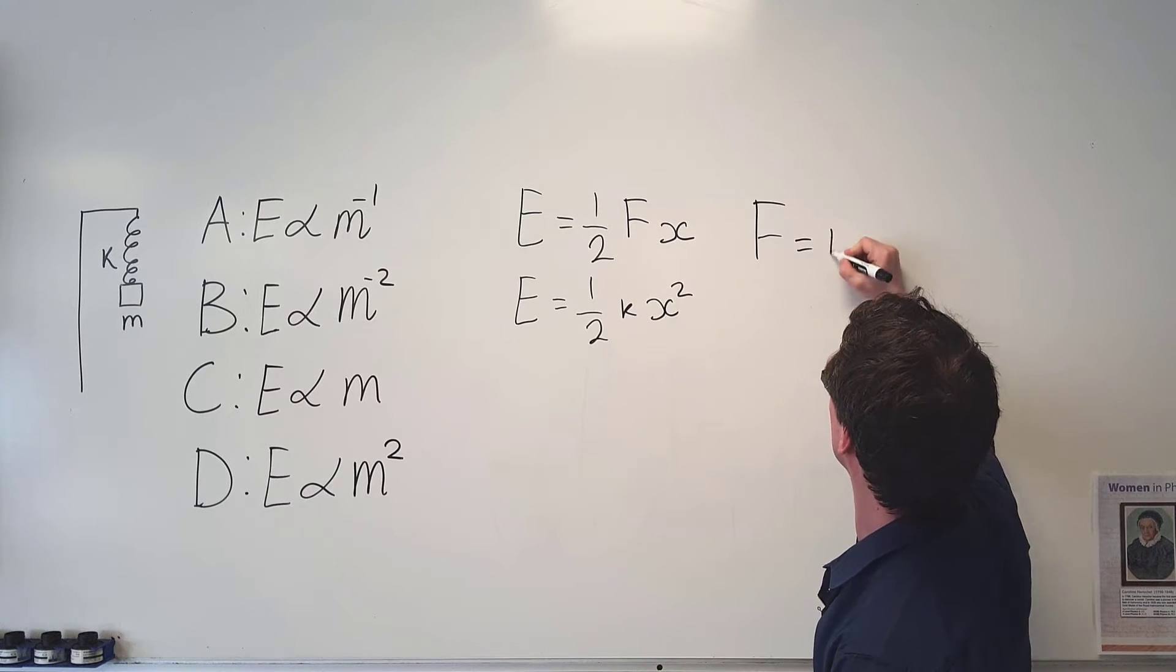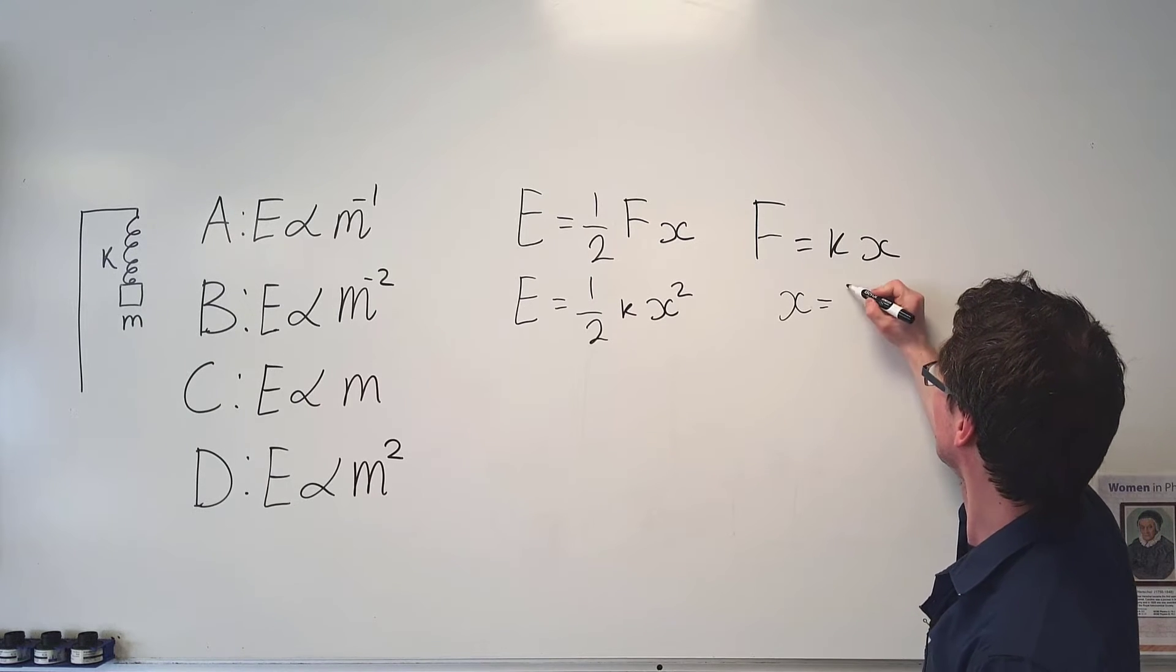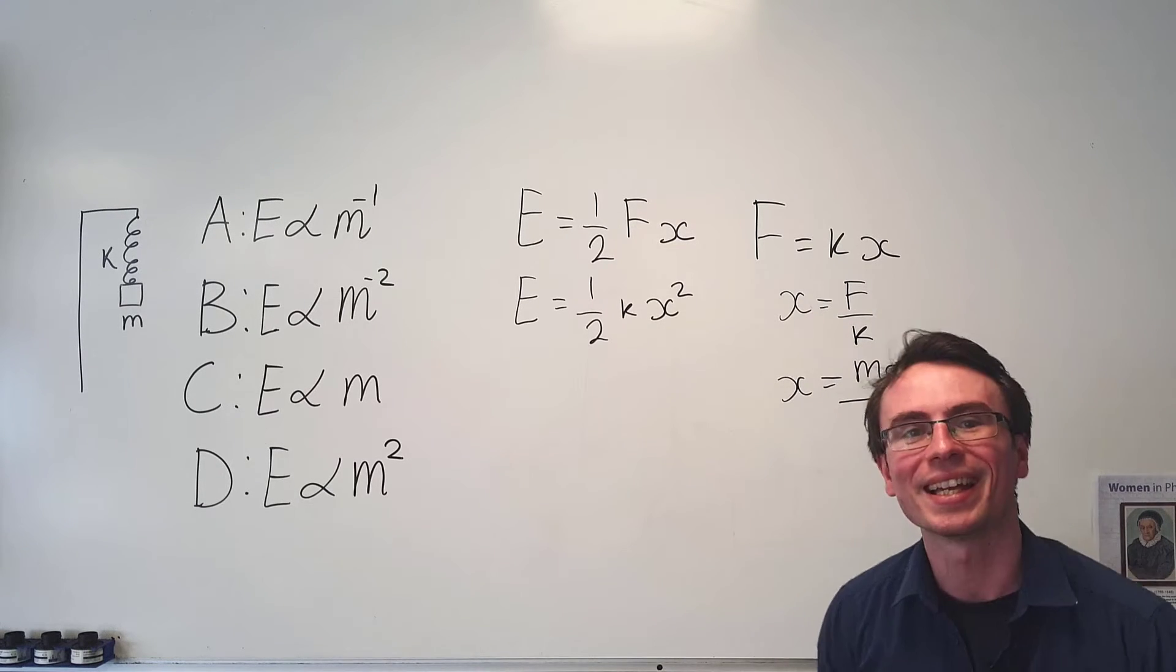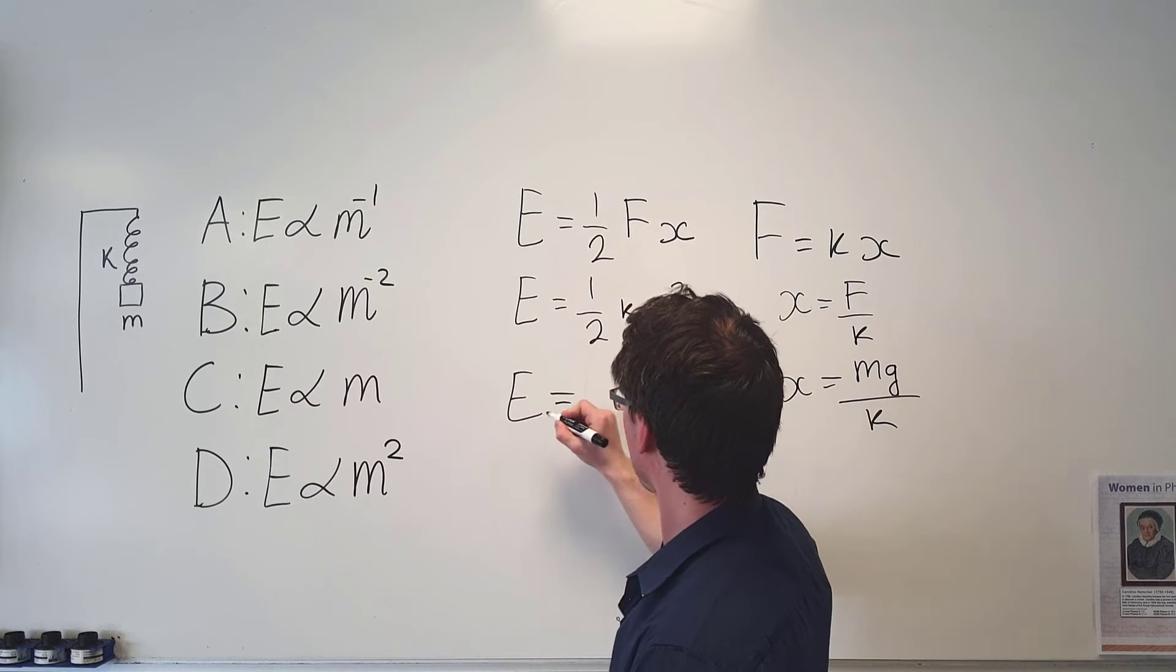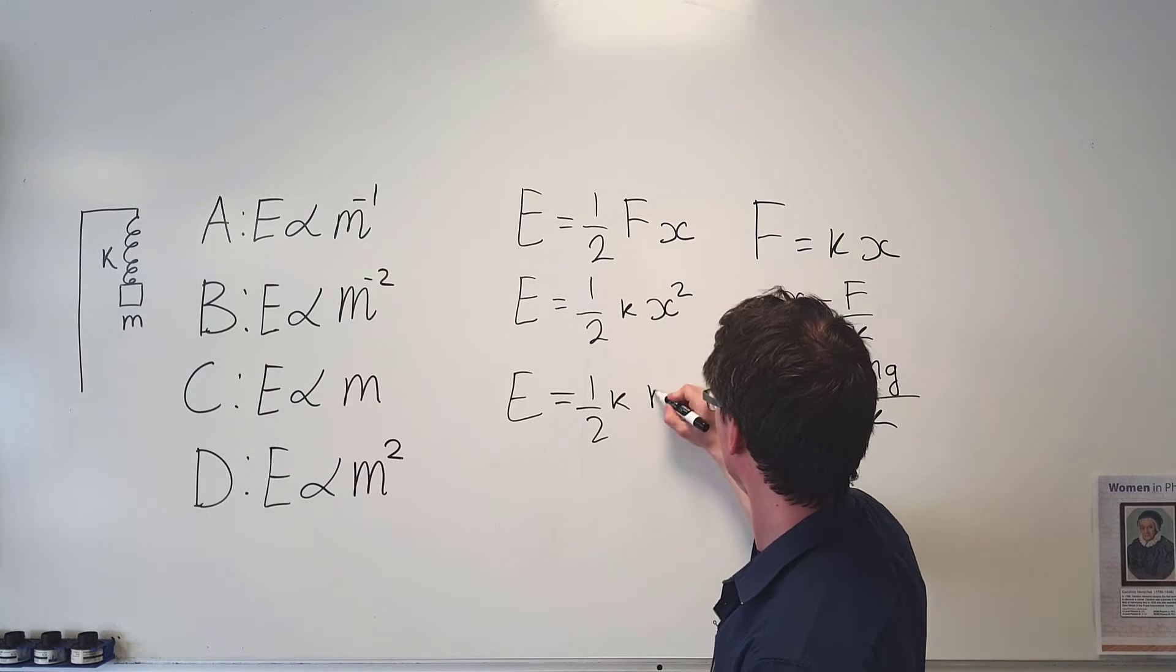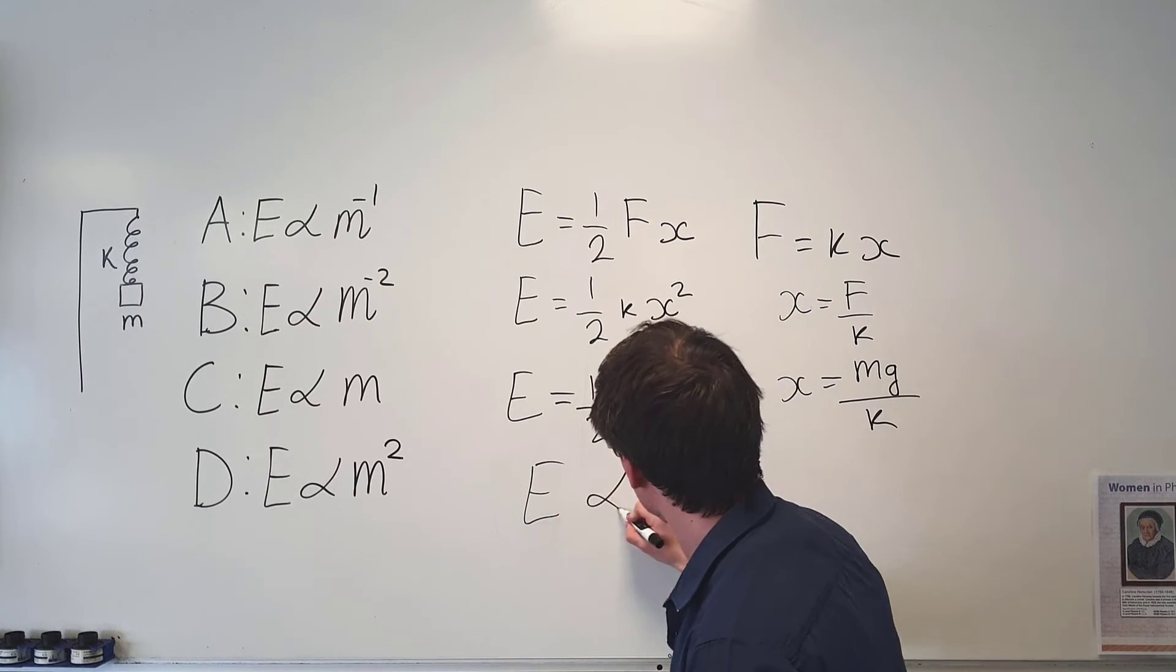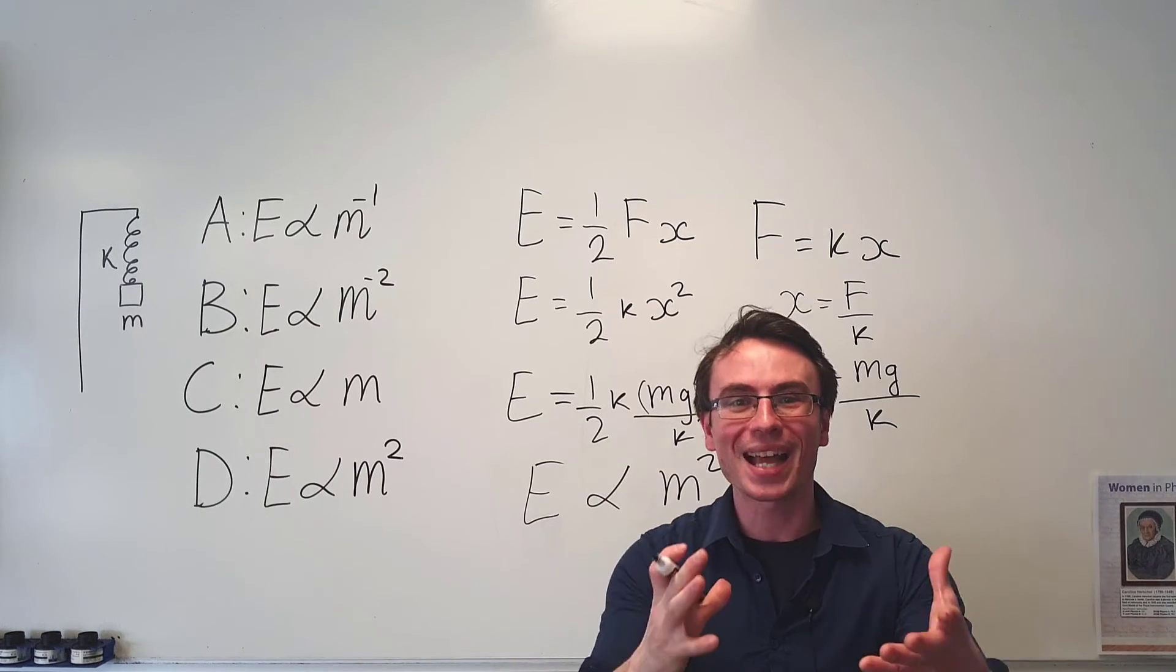Remember, because F is equal to Kx, this means that X will be equal to F over K, meaning that X will be equal to Mg divided by K. So let's put this into here. We're going to get that the elastic potential energy is equal to a half K. Now, X squared is equal to Mg squared divided by K squared, meaning that the elastic potential energy is actually proportional to the mass squared.